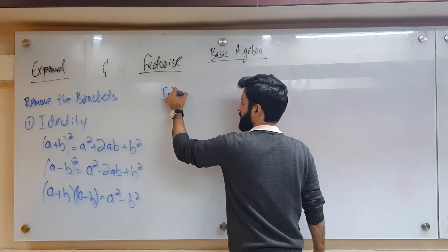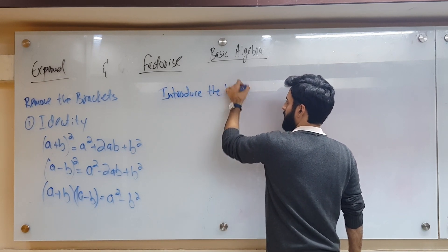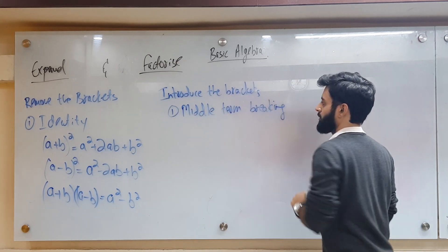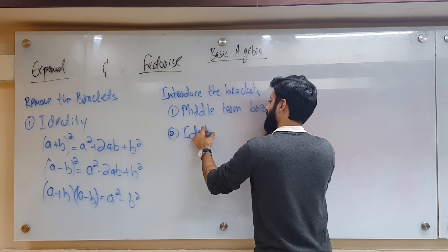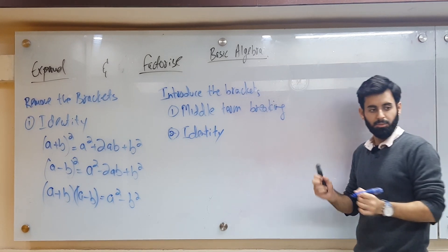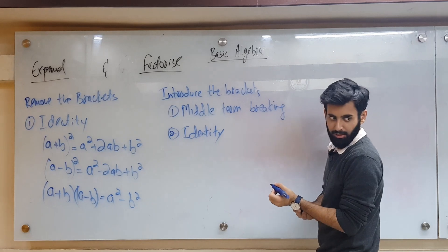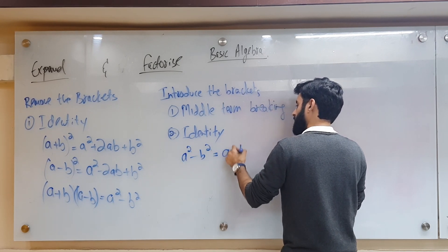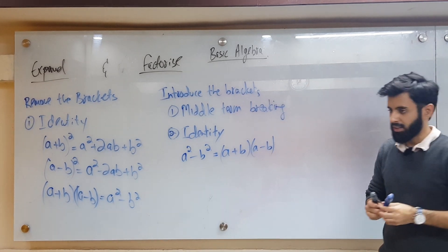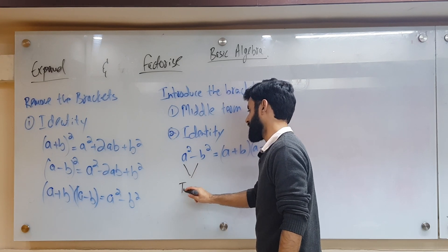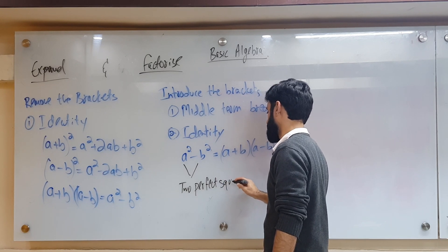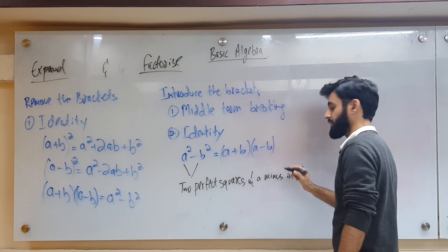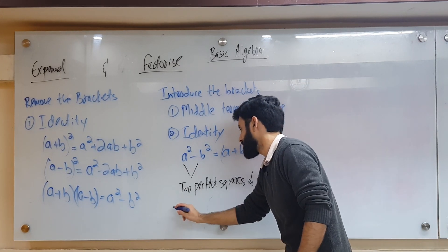Factorize means we introduce the brackets. We can do this with the help of middle term breaking, or again with identities. We never factorize with the help of a quadratic formula — we solve with a quadratic formula, but not factorize. The identity a² - b² = (a+b)(a-b) applies when you have two perfect squares with a minus in between. You can also factorize by taking common.